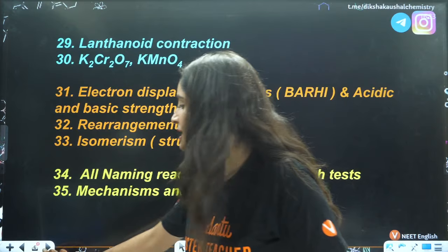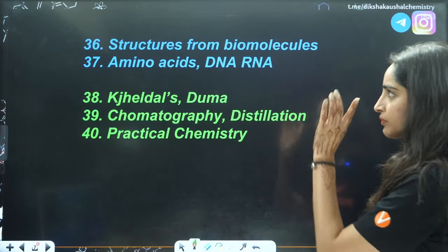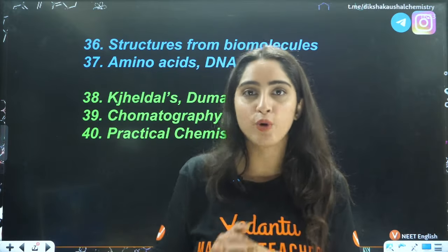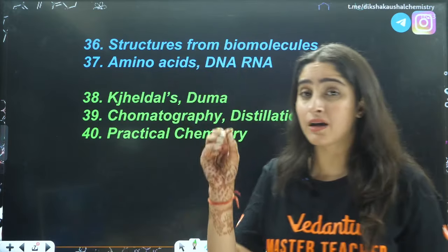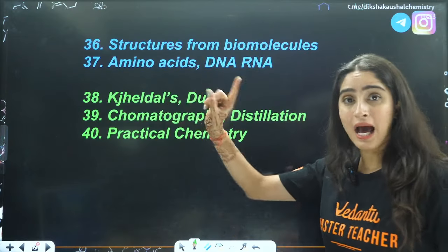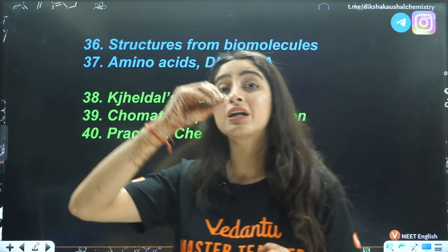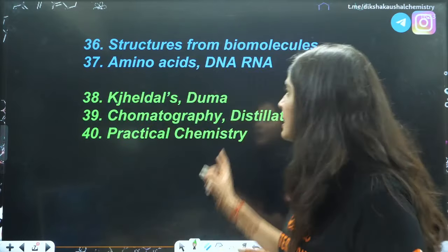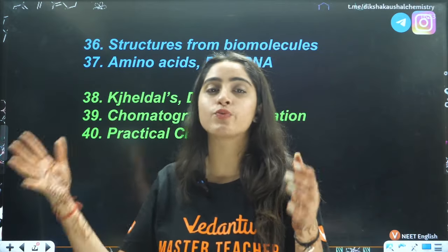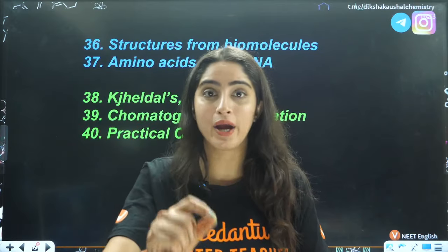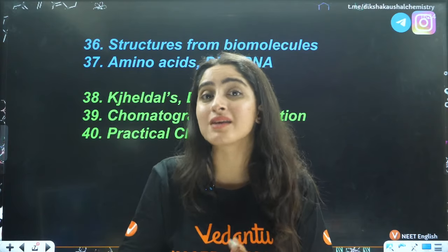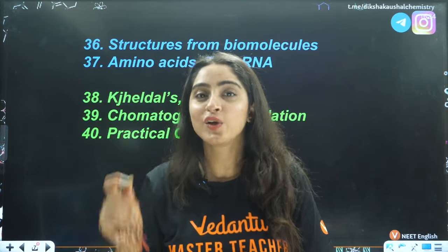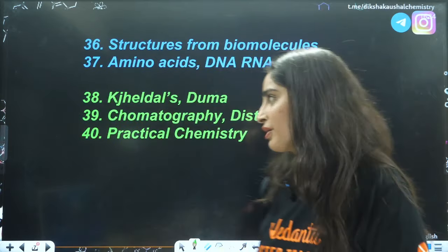Next is structures from biomolecules — structures of carbohydrates including sucrose, maltose, monosaccharides, and disaccharides. Then amino acids: peptide bonds, names of different amino acids, and identification of acidic vs. basic amino acids. From DNA and RNA, know the differences: which sugar is used, and which nitrogenous bases are present — A, T, G, C for DNA and A, U, G, C for RNA.